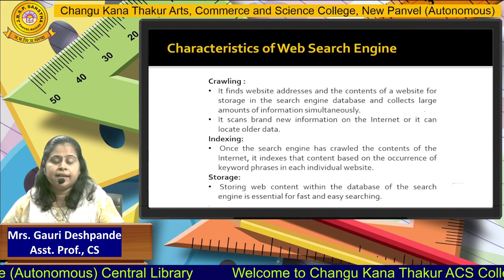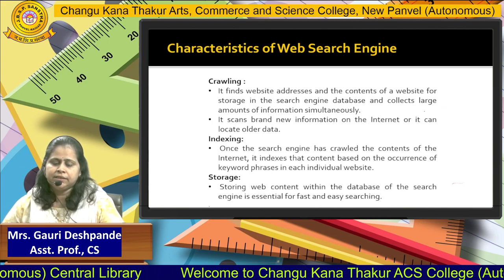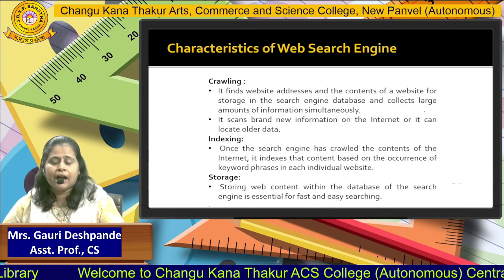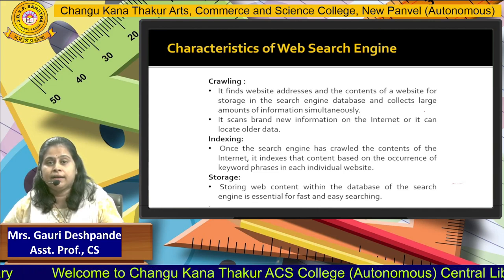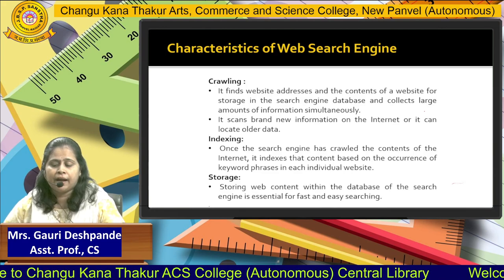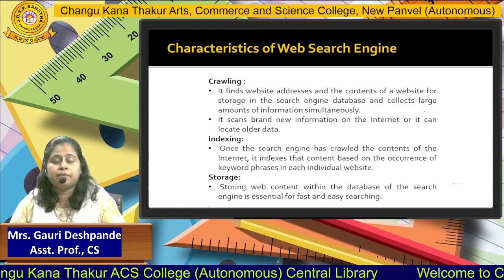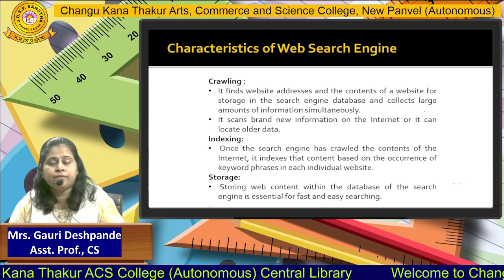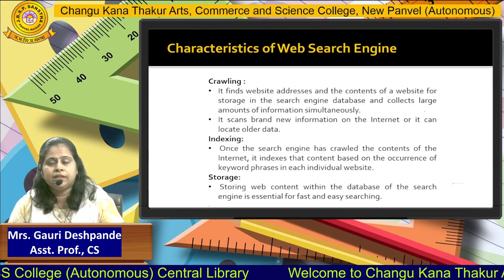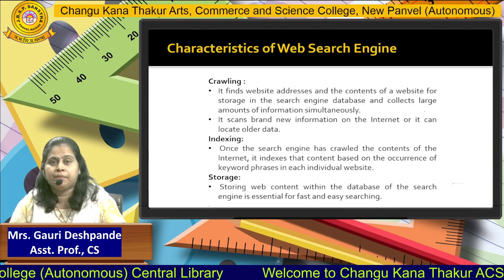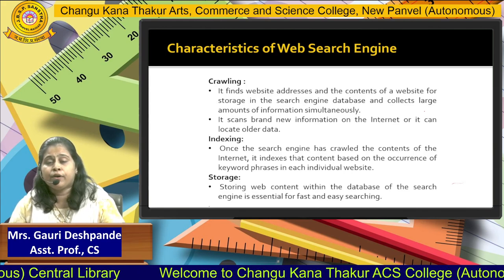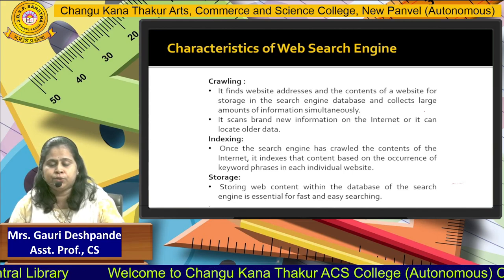What are the characteristics of web search engines? The first characteristic is crawling. Crawling is one kind of software application or program. With the help of that program, we can find out data from the search engine — for example, if we want to find out information about any sports person, we can find out the data from heterogeneous resources.